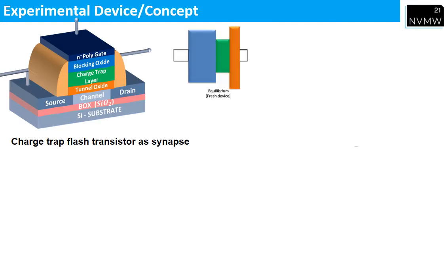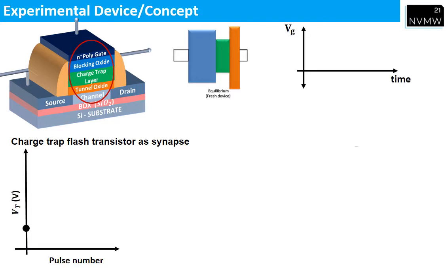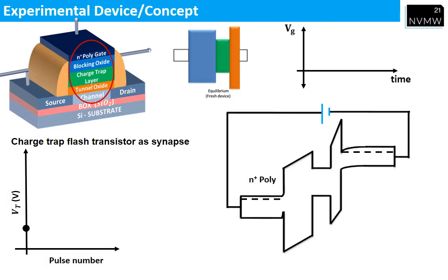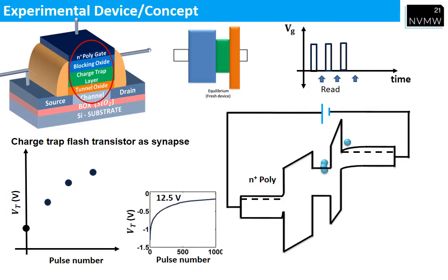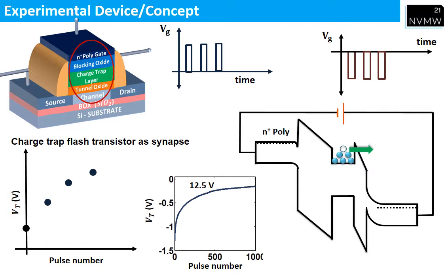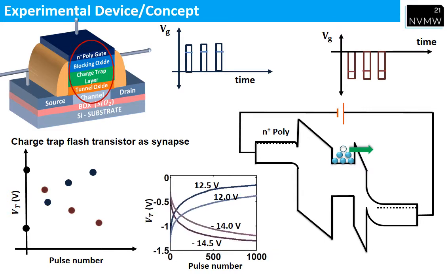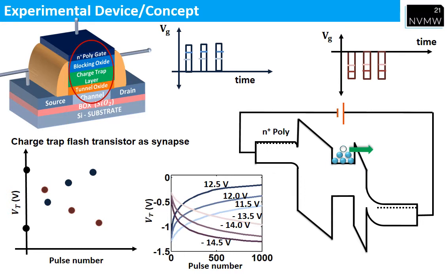Now I will explain how charge trap flash works as a synapse. We are working with a MOSCAP structure. With each pulse, there is a change in VT. When we apply positive gate bias, electrons tunnel and are stored in the trap layer, and with each pulse there is a shift in VT. For a particular gate bias, this VT shift gives a particular VT. Similarly, if we apply negative bias, electrons are removed through the trap layer and VT shift decreases. So for different voltages, we get different VT shift states.